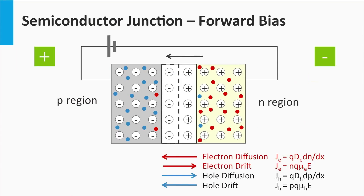First, we consider a p-n junction in the dark and we apply a forward bias on the device. This means we have a more positive voltage at the p-region side than at the n-region side. The depletion zone is the area where the built-in electric field is present. It is also the zone with the highest resistivity, and the applied external bias will create an additional electric field at the depletion zone, indicated by the green arrow. This additional field is opposite to the built-in electric field indicated by the black arrow.